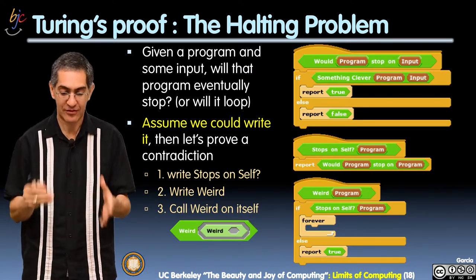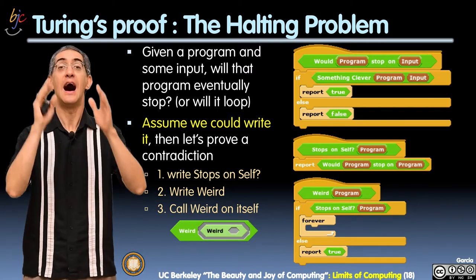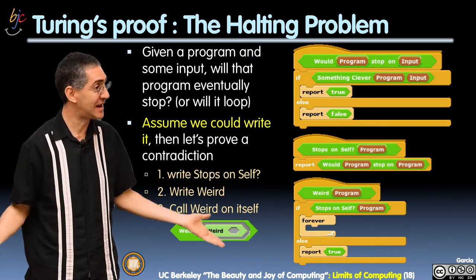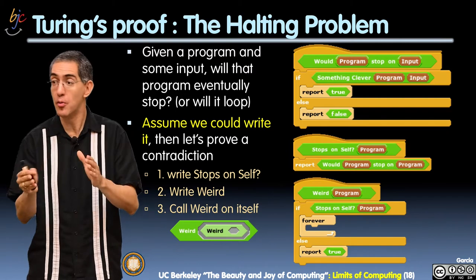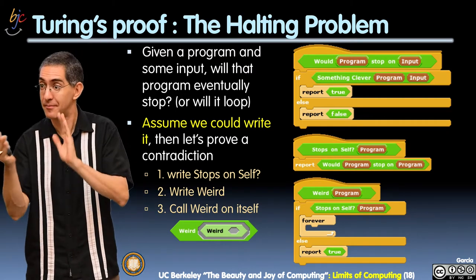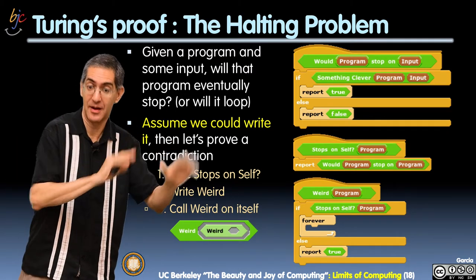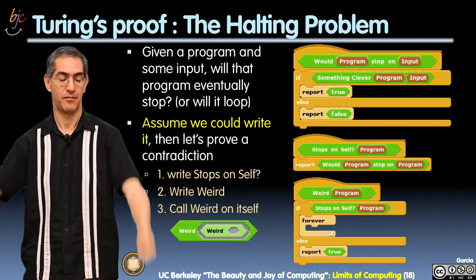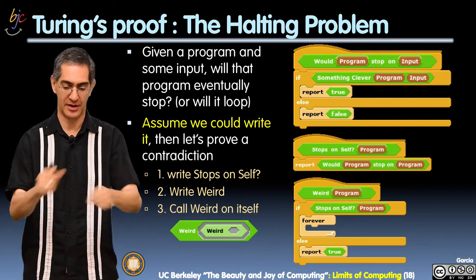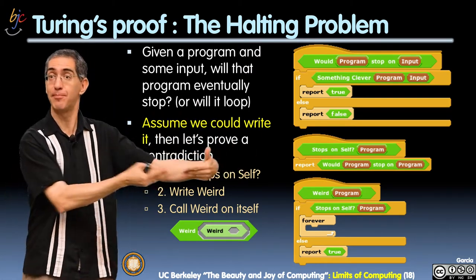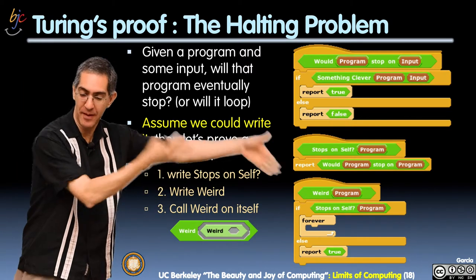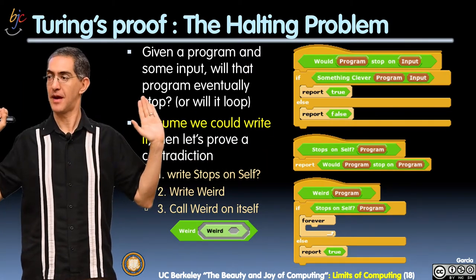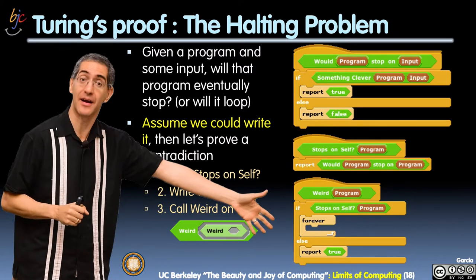I claim — let's try it. Assume we could write it. I'm trying to ask if it's decidable or not. We're going to assume we could write it, but I claim we can't. Assume we could, and let's see if we get to some weird impossibility. So I assume I can write this block: 'Would program stop on data?' I assume I can write that, and there's the block.